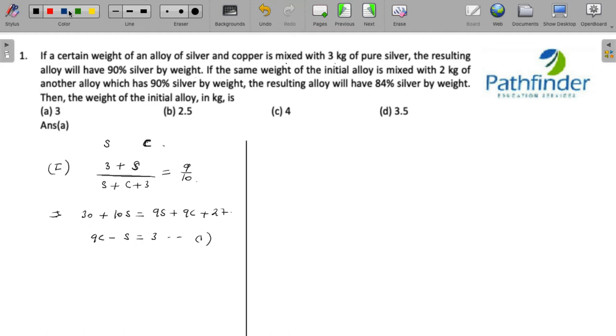What next? If the same weight of initial alloy is mixed with 2 kg of another alloy which has 90% silver, now you have 2 kg and 90% silver, that means this particular alloy must have 1.8 kg of silver.